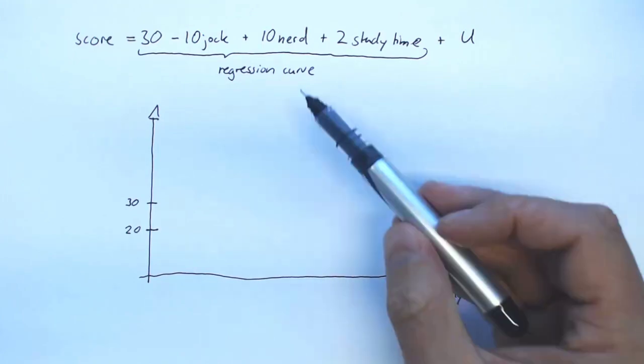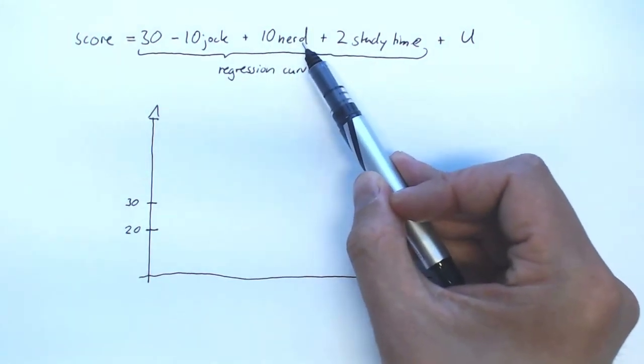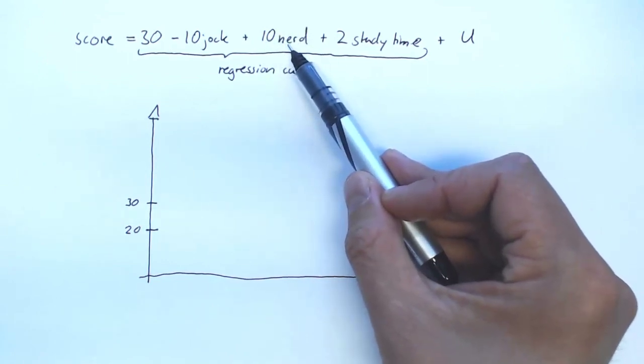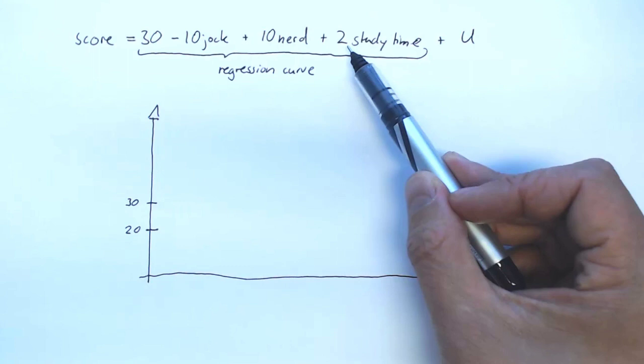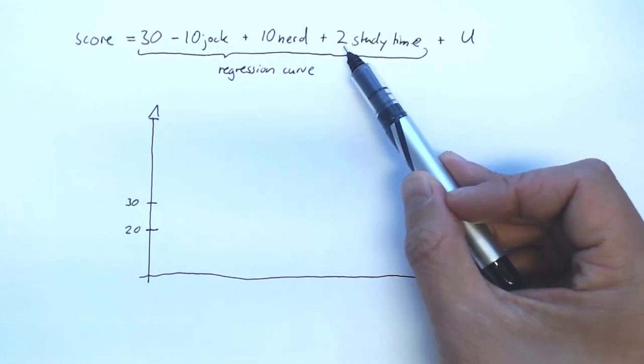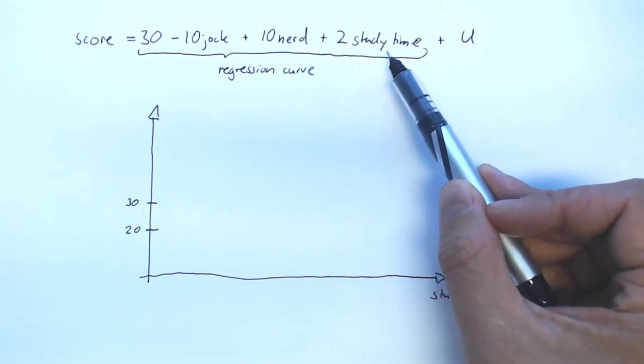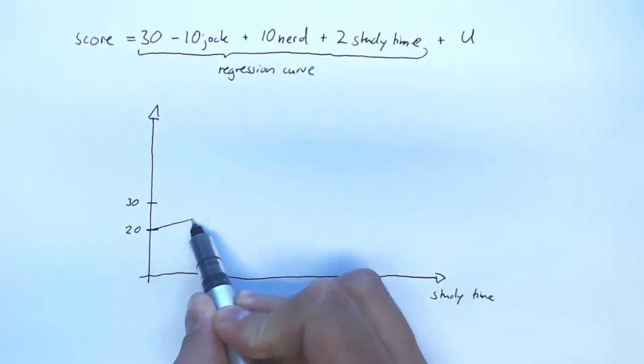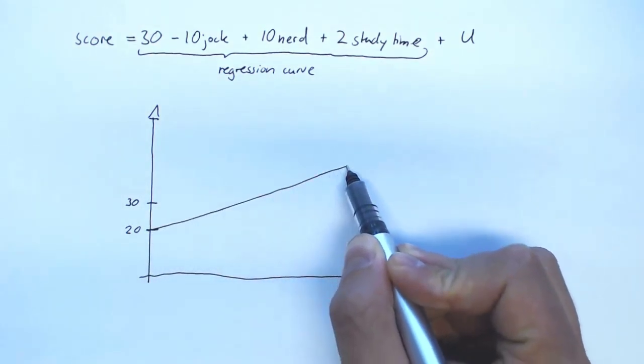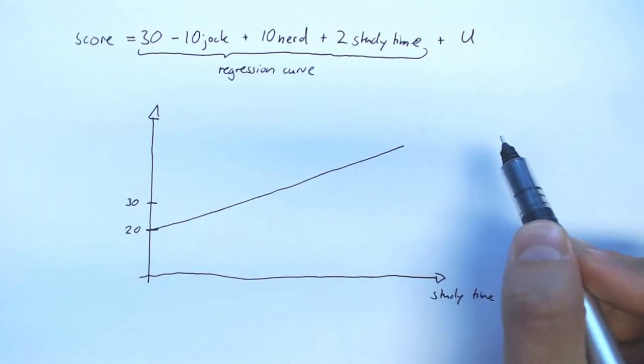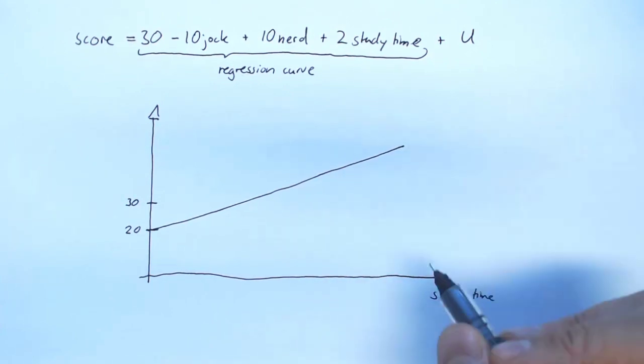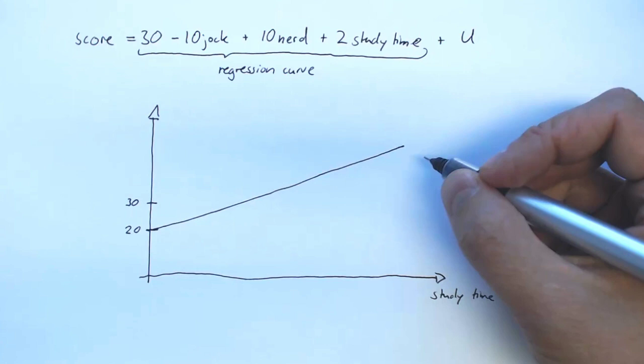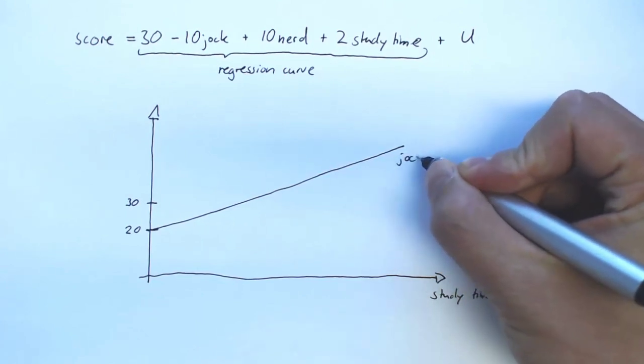Then you get 10 times nerd, but you're not a nerd so the variable nerd takes the value 0 for you, so this part doesn't change anything. And then you get 2 points on the exam for every hour that you studied. So this will be an upward sloping linear function. This was for jocks.